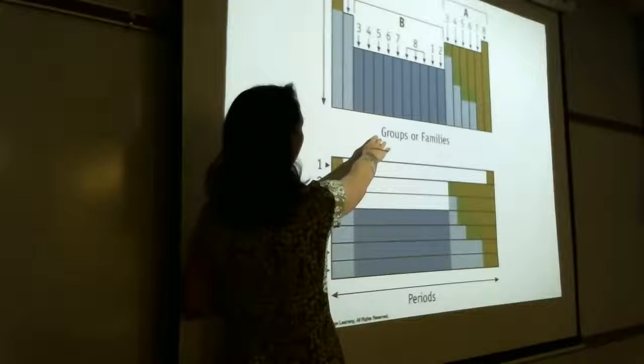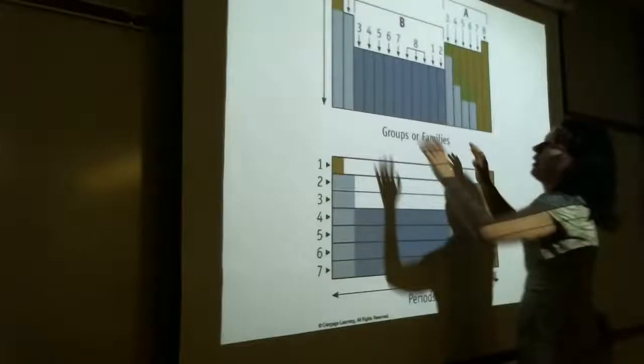Other non-metals are gases at room temperature — for instance, nitrogen, oxygen, chlorine, bromine, and iodine are all non-metals and gases at room temperature. If you understand the properties of metals, by opposite, you know the non-metals.